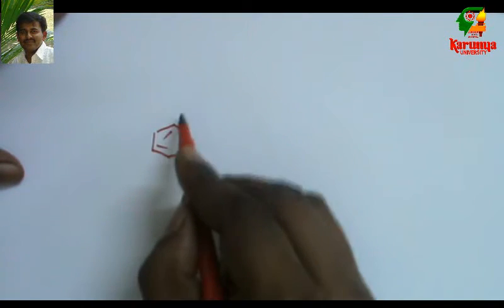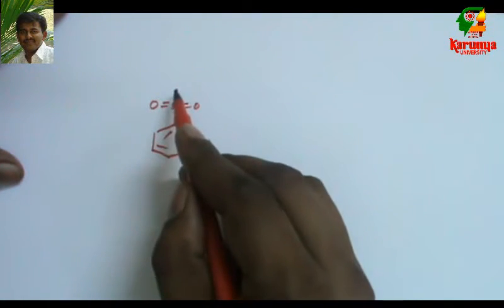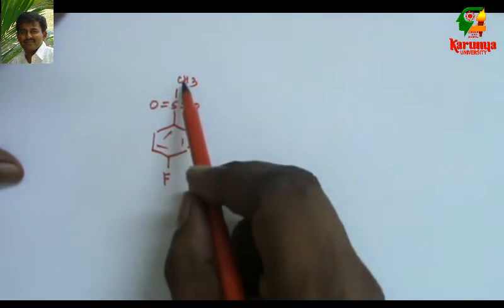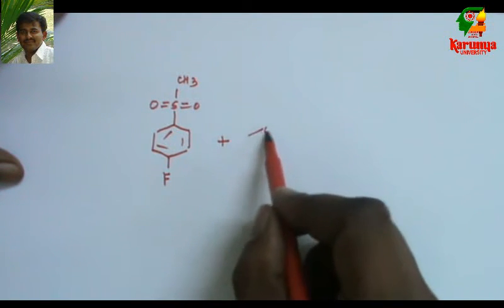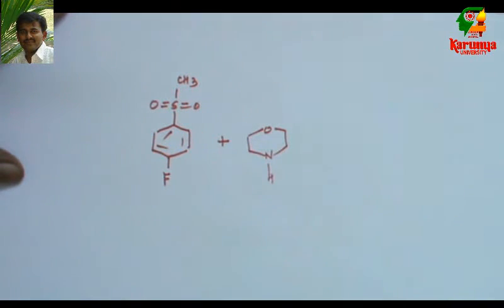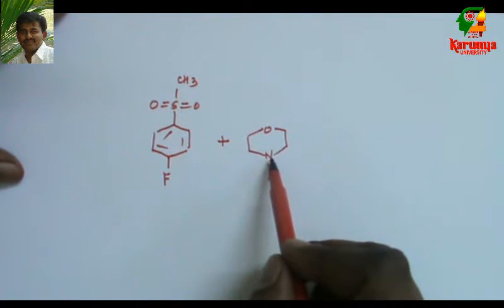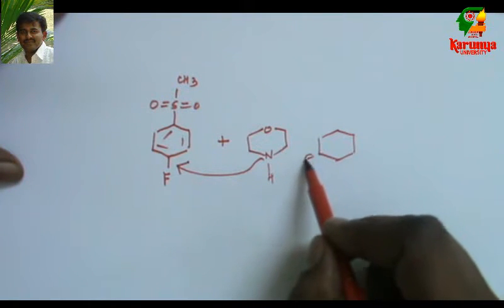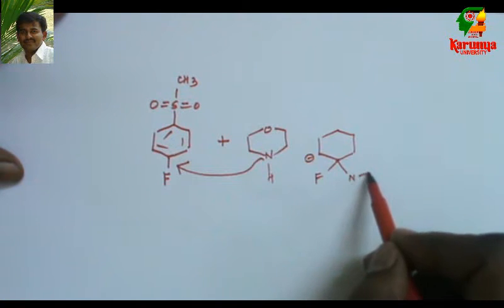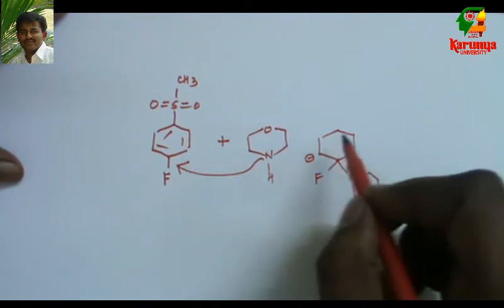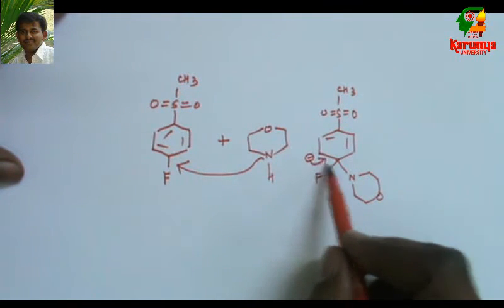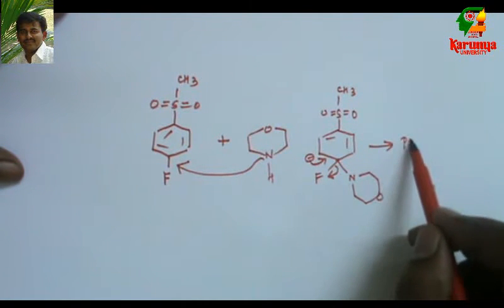In our problem, the given compound is sulfone, 4-fluorophenyl methyl sulfone. This reacts with morpholine. This nitrogen attacks here to give this intermediate. And when it comes back, this is the leaving group. So we get the product given in the question paper.